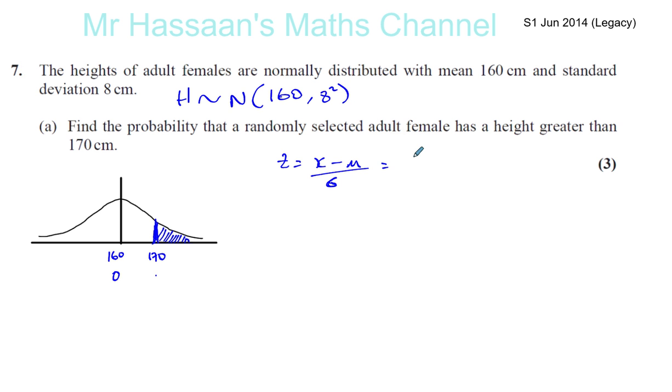Okay, so you've got X, which is 170 minus 160 over 8. Okay, so it's 170 minus the mean over the standard deviation, which is 8. Okay, so that gives you 10 divided by 8, which is 5 over 4, which is 1.25.